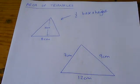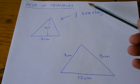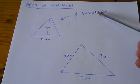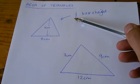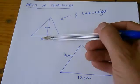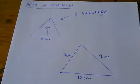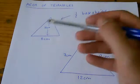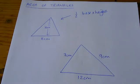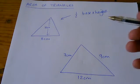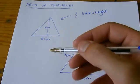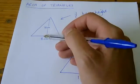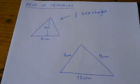So, lots of people would do base times height and then half their answer when they're using this formula. If you try that, 8 times 16, you've got to do a lot more work doing 8 times 16 and then halving it, than if you half the base or the height beforehand.